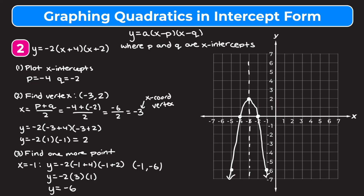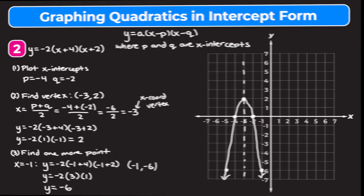So that is how we graph y equals negative two times the quantity of x plus four times the quantity of x plus two. Hopefully this video helped you understand how to graph quadratics in intercept form. If you want more practice with problems similar to these, check out the link in our description for a free practice worksheet.